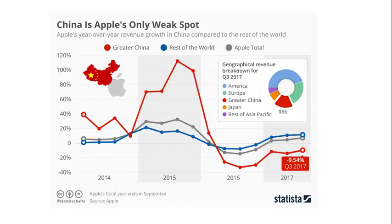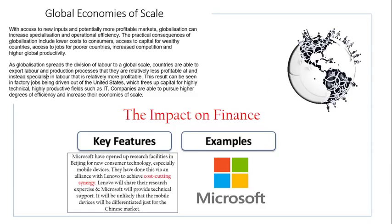Internationalization also allows companies to experience economies of scale. Operating on a bigger scale allows businesses to benefit from lower average costs — things like being close to suppliers, being closer to international markets, producing on a larger scale, and standardizing products can all lead to lower average costs. There's an example of Microsoft teaming up with Lenovo in order to achieve a cost-cutting synergy. Lenovo will share their research and expertise in the Chinese market, and Microsoft will provide technical support, helping both organizations cut costs.